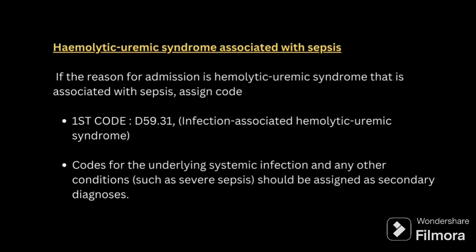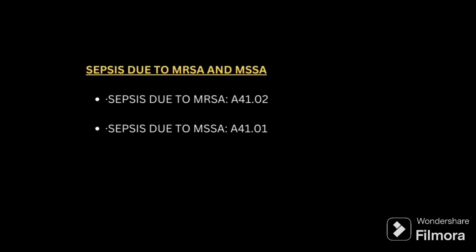Next: hemolytic uremic syndrome associated with sepsis. The first code should be for hemolytic uremic syndrome — D59.31 — and this code includes sepsis, so there is no need to code sepsis separately. If severe sepsis is present, you can code for severe sepsis with or without septic shock as the second code.